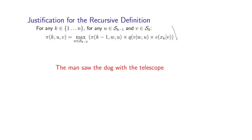Okay, so to justify this recursive definition, I'm going to use an example. We'll use this sentence we've seen before. Let's see how we can calculate the value for pi(7,p,d). Recall, this is going to be the highest probability for any tag sequence ending in tags p and d at positions 6 and 7.